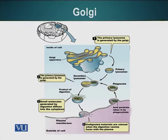The Golgi apparatus looks like a stack of rotis. These stacks have three different types with distinct functions. The one closer to the nucleus is called the cis cisternae. The ones in the middle are called the medial cisternae. And the ones facing the plasma membrane are called the trans cisternae.